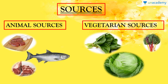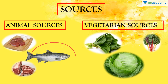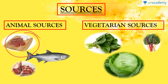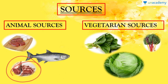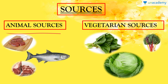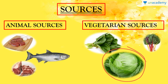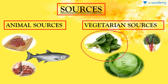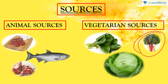If we talk about sources, animal sources mainly include fish, meat, eggs, cheese, beef, and other non-vegetarian food substances we normally consume. Vegetable sources mainly include cabbage, spinach, and other green leafy vegetables.